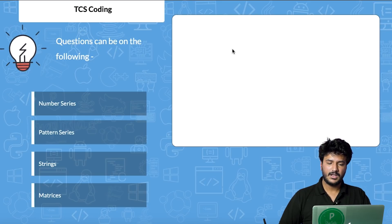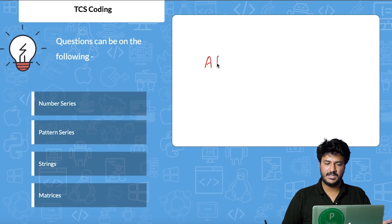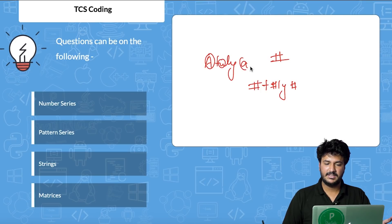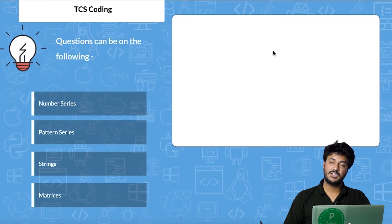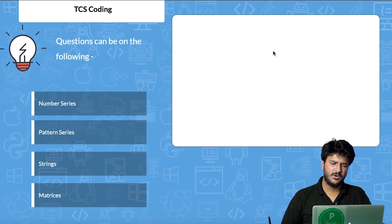Questions on strings could also be asked — for example, they might ask you to convert all the vowels of a string to a hashtag. Let's say 'my name is artolia' — the output would change each vowel to '#', so you'd get something like 'my n#m# #s #rt#l##'. We've covered this question in one of our other videos, the link to which you can find in the description below.